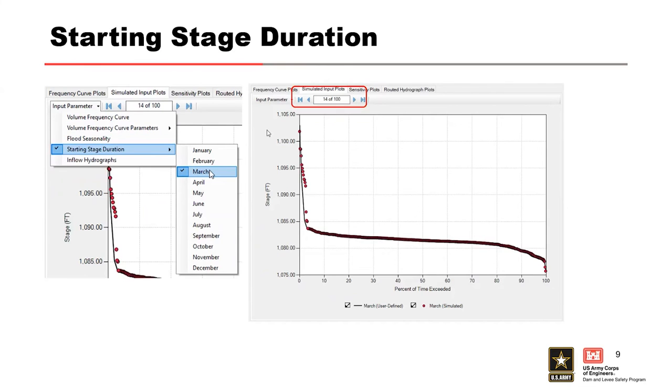Like flood seasonality, if you run the expected and median frequency, the plot will only display one curve for each month. Because, again, there's only one realization, whereas if you run the full uncertainty, you'll have them for each realization.